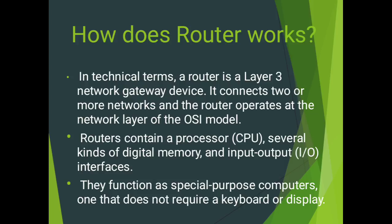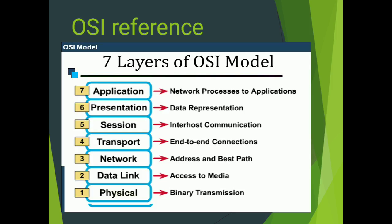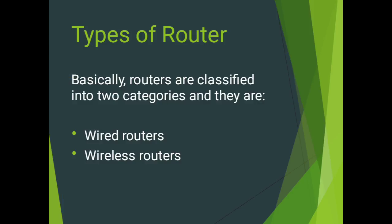A router contains a processor (CPU), several kinds of digital memory, and input/output interfaces. Here we can see the OSI reference model, where the router is a Layer 3, that is, a network gateway device. It operates at the network layer of the OSI model, which provides addressing and best path selection.